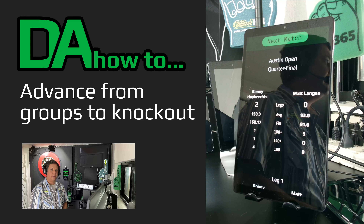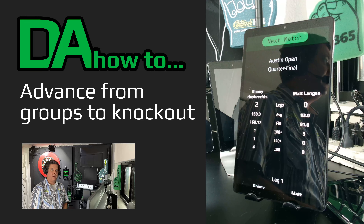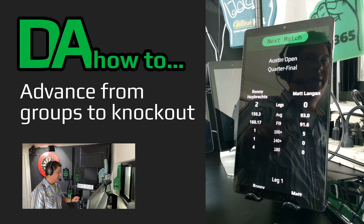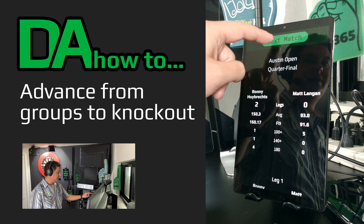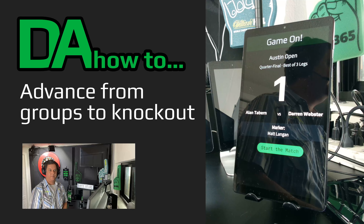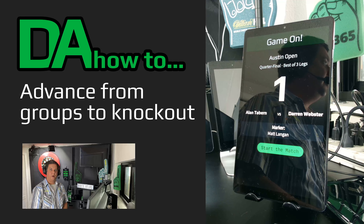If you're in a tournament and have automatic match assignment enabled, then the next tournament match will be accessible by selecting the Next Match button at the top of the screen. And that's how to score a leg of 501 on Darts Atlas.